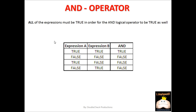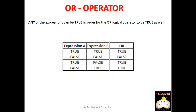For the purposes of the AND operator, the emphasis is that all of the expressions must be true. Now let's look at the OR logical operator. In this case, any of the expressions can be true and the OR logical operator will be true, which is much different than our AND operator. Any of the expressions can be true and the OR logical operator will come out true as well.